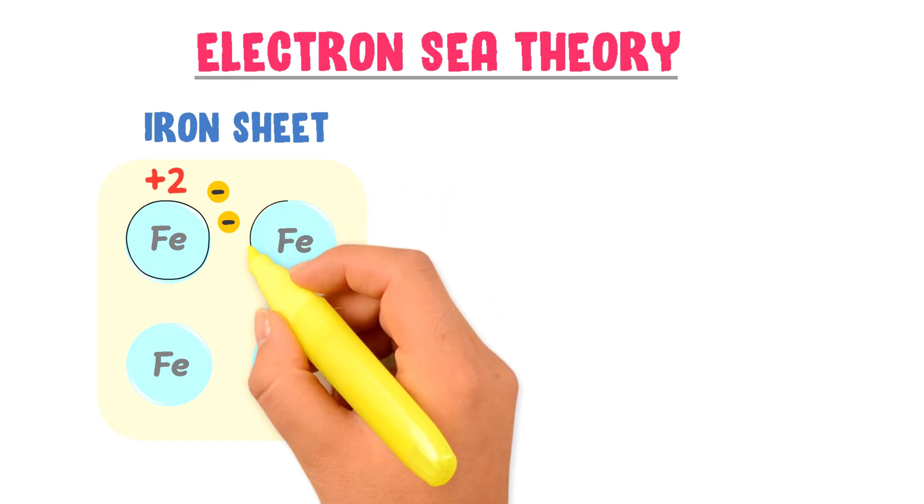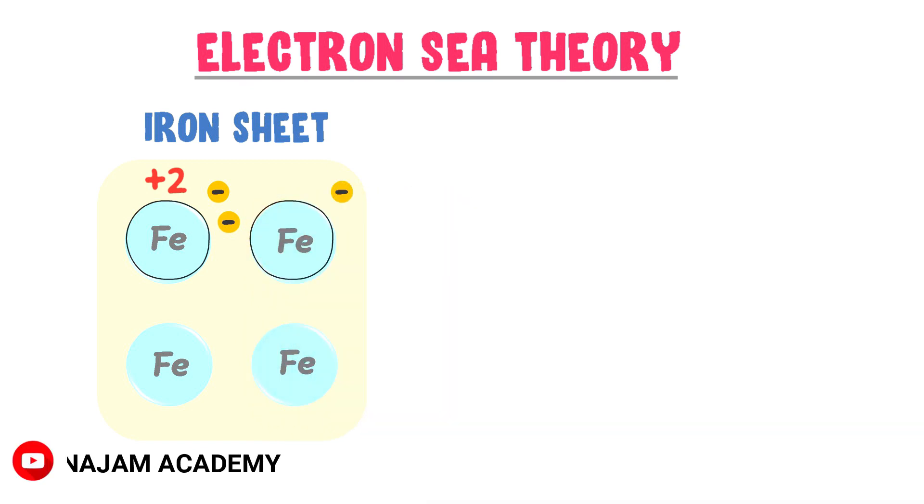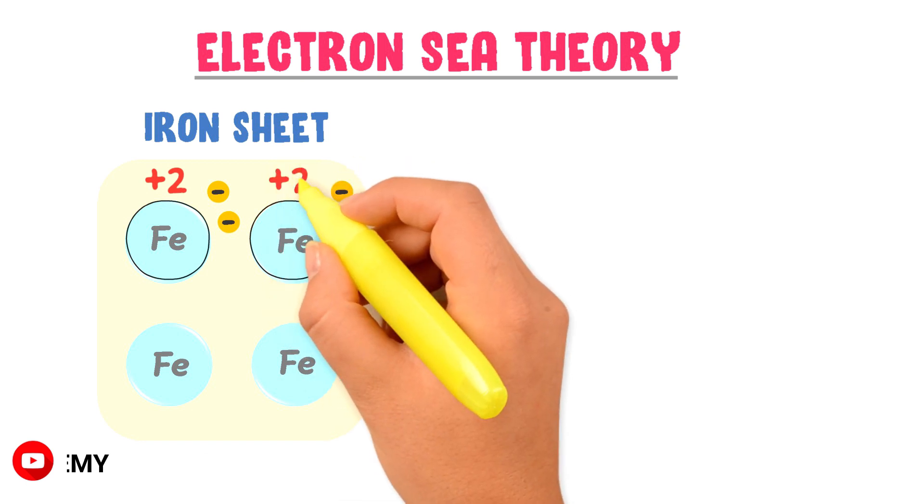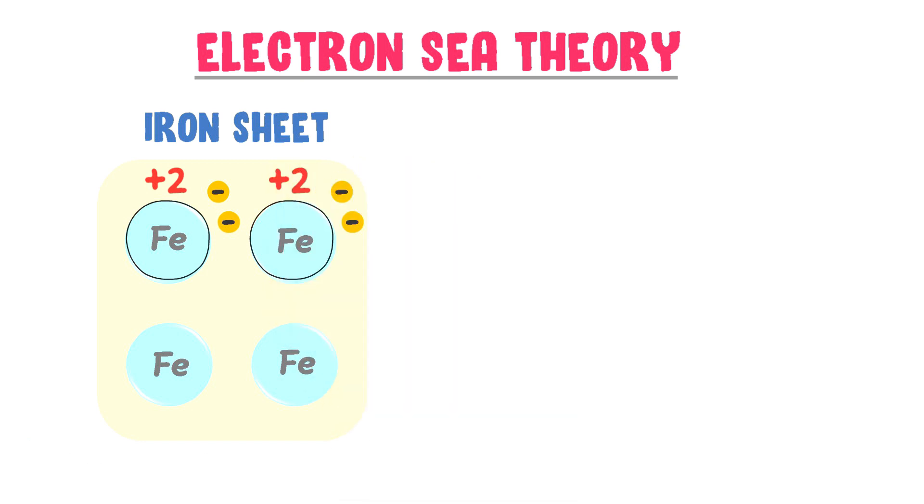Similarly, this iron atom will lose its two valence electrons and will become double positively charged. This iron atom will also lose its two valence electrons and will become double positively charged.